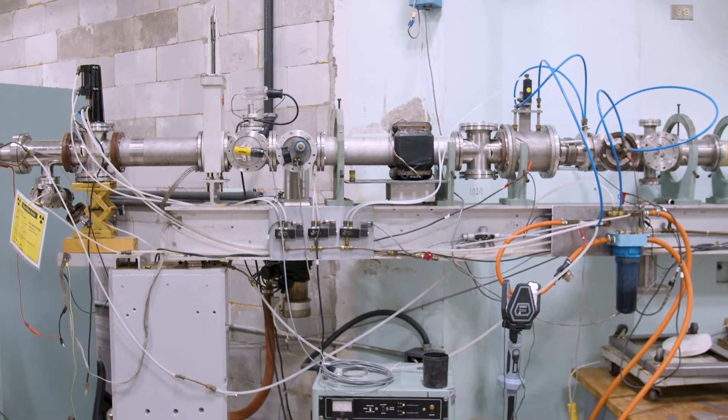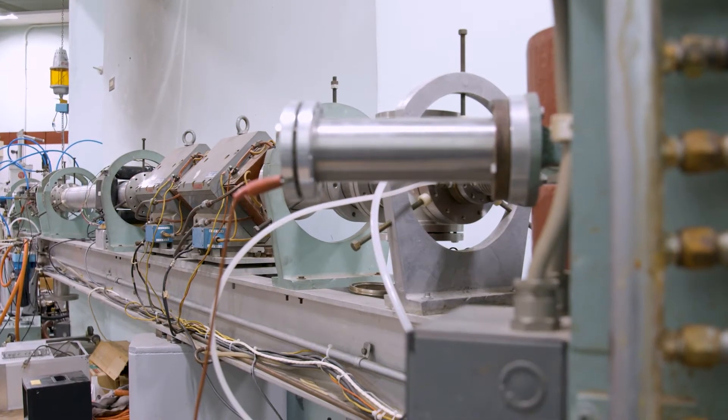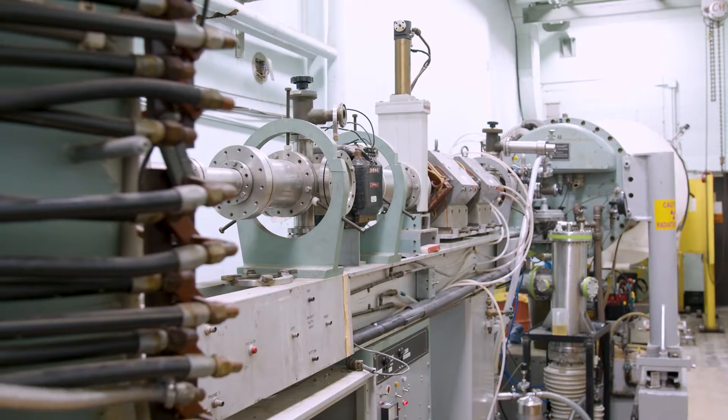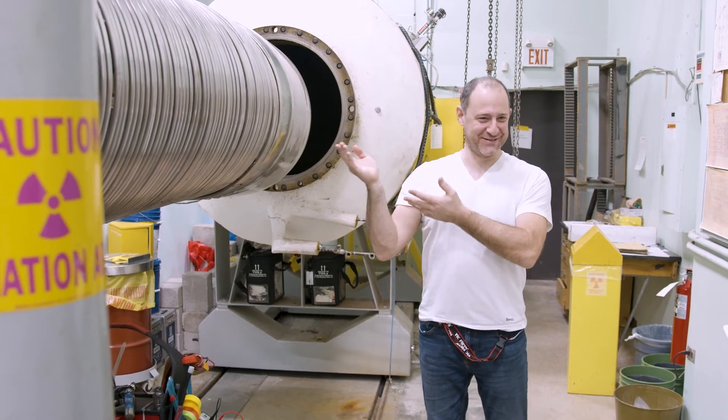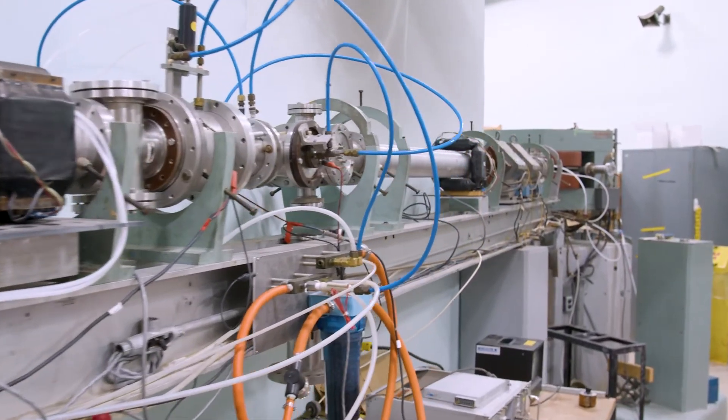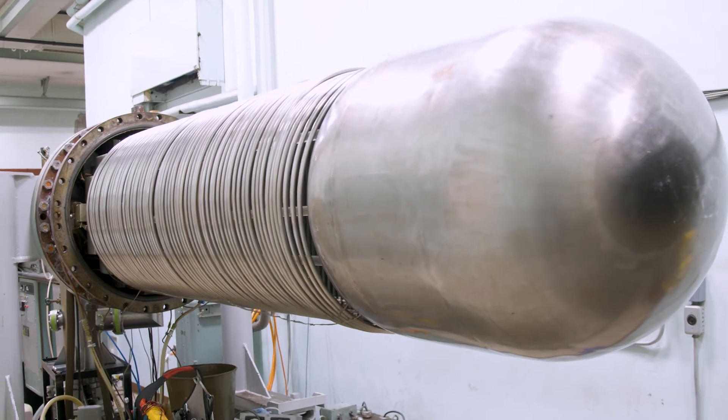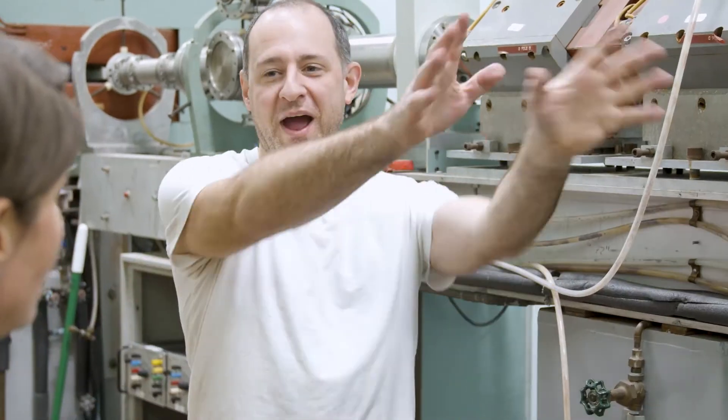The McMaster Accelerator Laboratory houses three low-energy particle accelerators, as well as a suite of other radiation sources. Our KN 3-MV Vandegraaff Accelerator is a linear, horizontal, single-ended Vandegraaff Accelerator with a design rating of 3 MV. It is used for a wide variety of experiments.